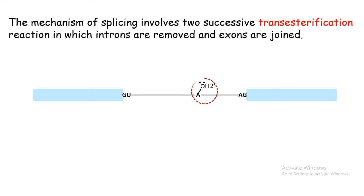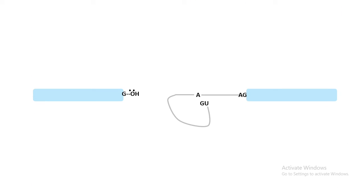The process of splicing is nothing but two subsequent transesterification reactions. There are two nucleophilic attacks. First, from the branch point adenine, the 2 prime hydroxy group would hit the GU bond. That is the first set of transesterification reaction. Between guanine and uracil there is a phosphodiester bond which would be attacked by the lone pairs of 2 prime hydroxy group.